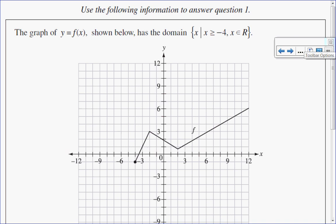In this multiple-choice question, we have a graph of f of x. It's shown below. It has a domain where x is greater than or equal to negative 4, so it's negative 4 and everything greater than that.